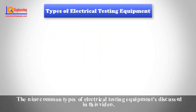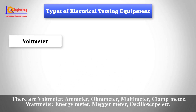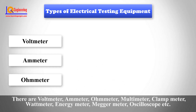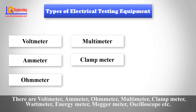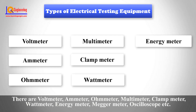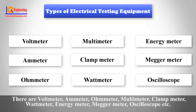The nine common types of electrical testing equipment discussed in this video are: voltmeter, ammeter, ohmmeter, multimeter, clamp meter, wattmeter, energy meter, megameter, and oscilloscope.